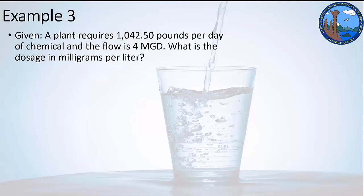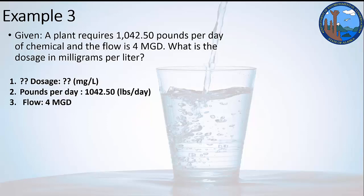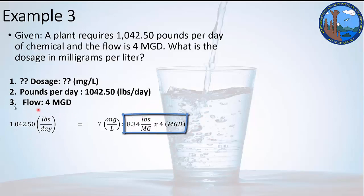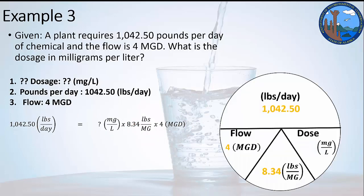We've got one last example. It's going to be the pounds formula. And this is what typically we're using the Davidson pie wheel for. You'll see this a lot more than other questions as far as when you see the Davidson pie wheel. So I'm going to write down all three of the things that we know. A plant requires 1,042.5 pounds per day of chemical, and the flow is 4 million gallons per day. What is the dosage in milligrams per liter? If we've got all those things written down, I pop over to my formula worksheet and find the formula. There it is. Now in this situation, if you were doing algebra, you'd have to take these numbers and divide both sides by them. So you divide 1,042.5 by this set of numbers and variables. In the Davidson pie wheel, we'd fill in the same kind of thing, only up here we'd have 1,042.5, and two of the pie slices would have these numbers in them.